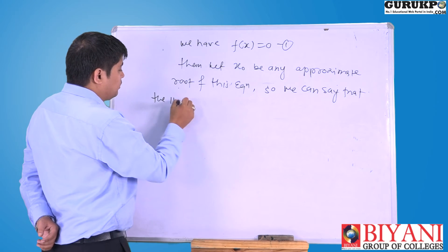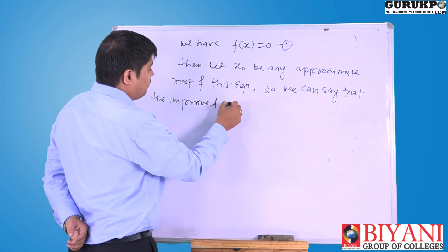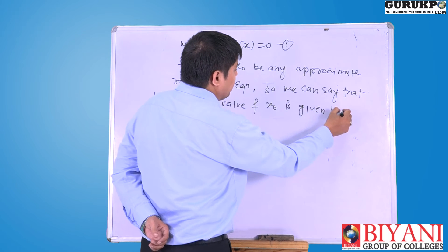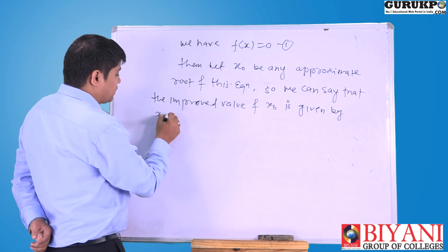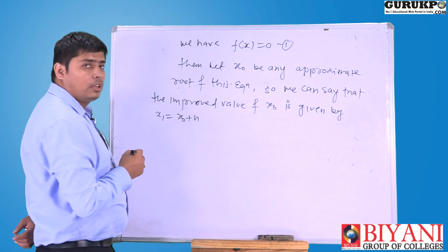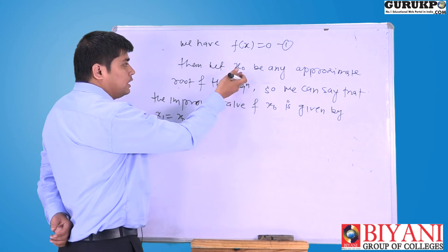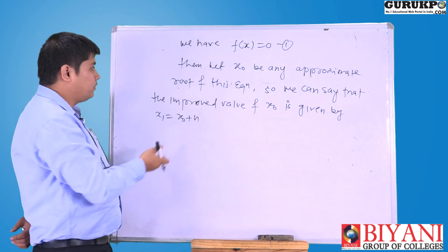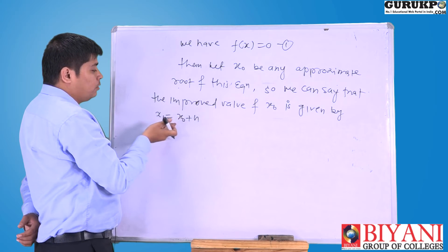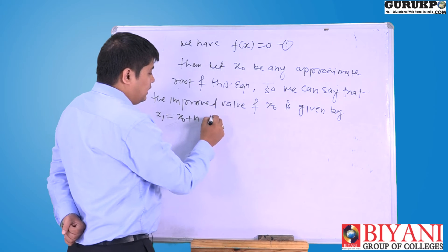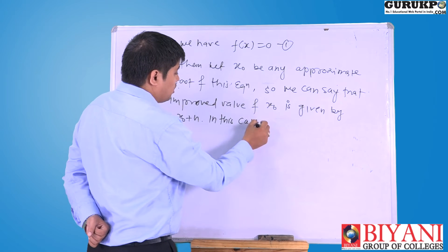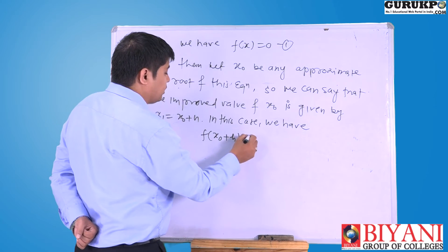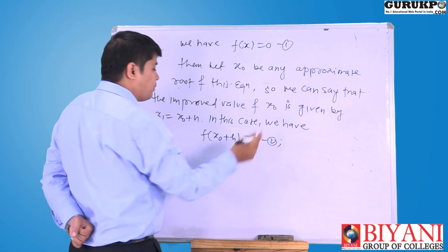Let x₀ be any approximate root of this equation. The improved value of x₀ is given by x₁ equal to x₀ plus h. If x₀ is the initial root or initial value of this equation, then the new improved value is x₁ equal to x₀ plus h. In this case we have f(x₀ + h) equal to 0.